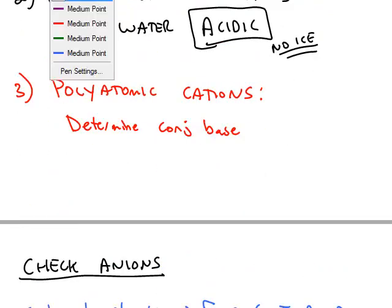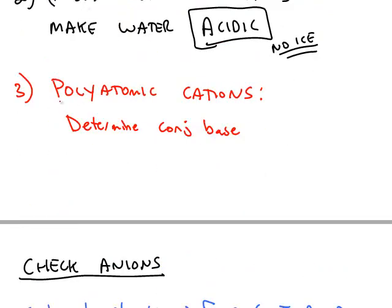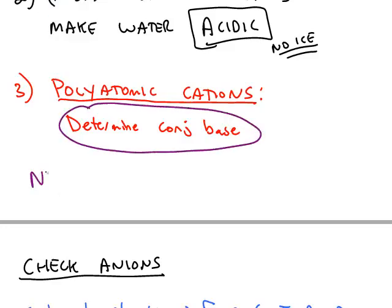The type where you will have to do an ice chart for is when you have a polyatomic cation. A polyatomic cation, to find out what kind of reaction it undergoes with water, you have to first figure out what is its conjugate base. So for example, NH4+, the ammonium cation. If you're looking for the conjugate base, you can find that by mentally subtracting an H+, and you get NH3.